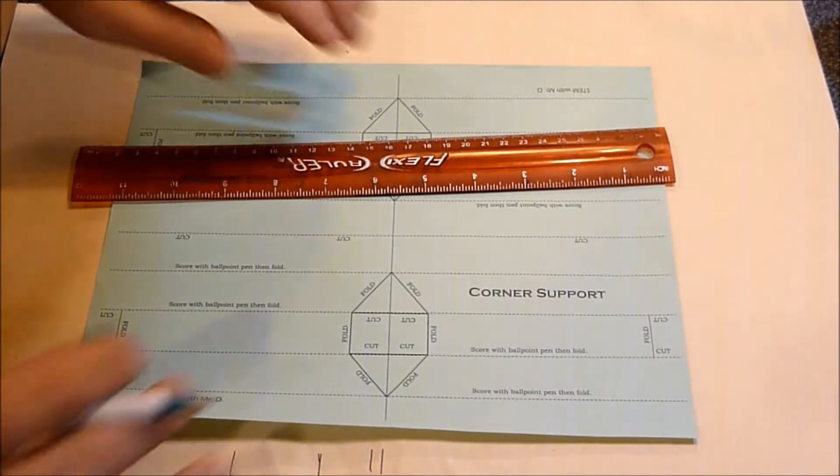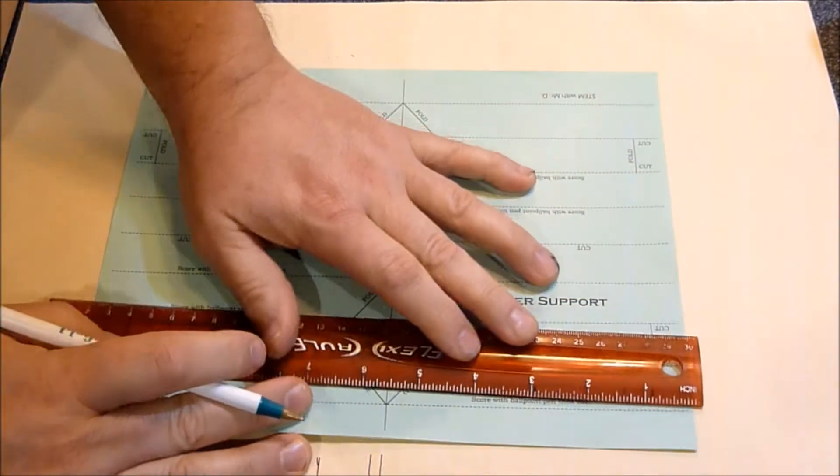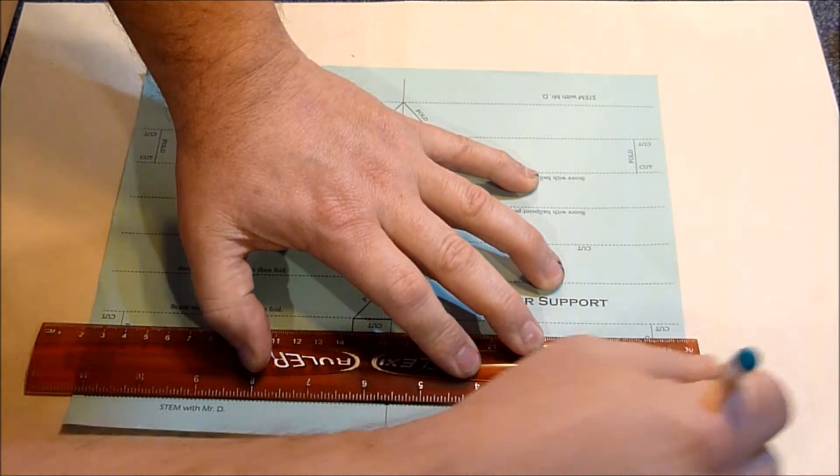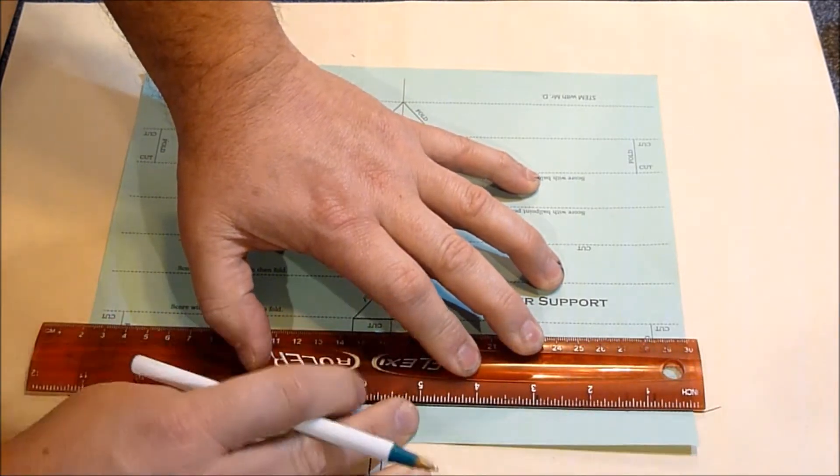This is how you make a corner support. You follow the same steps you do for all the beams. You score the dotted lines with a ballpoint pen.